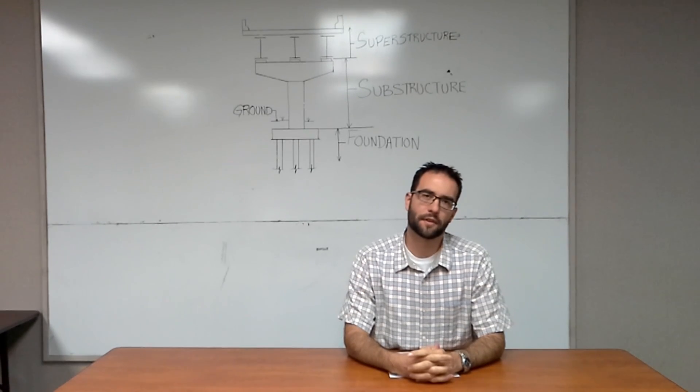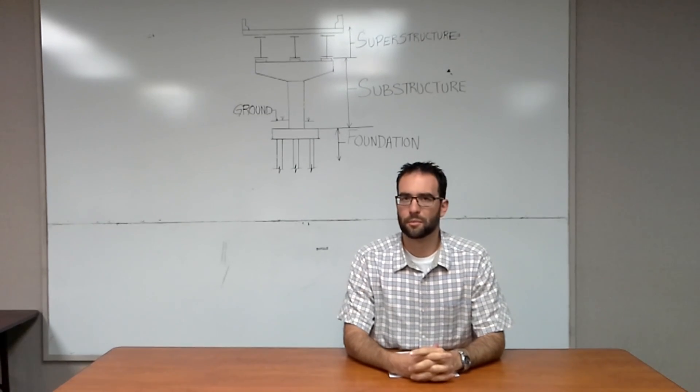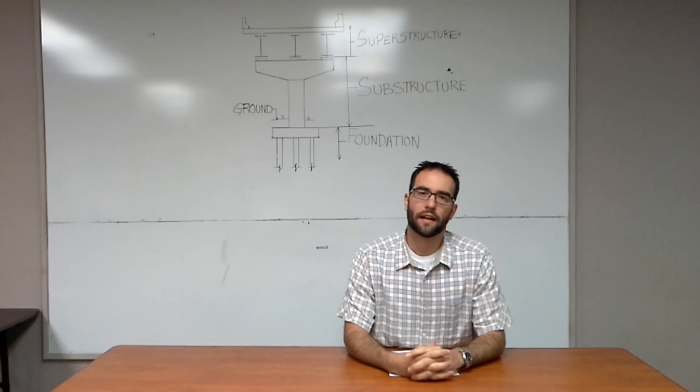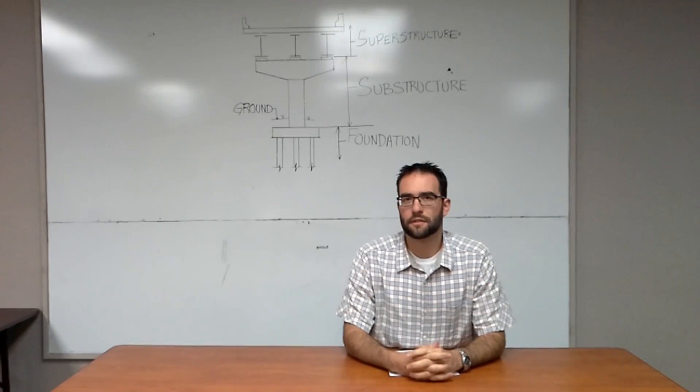The superstructure extends from the top of the deck to the bottom of the beams. The deck is the portion of the bridge where traffic or pedestrians will be located, and it's generally made of concrete, whereas the beams are generally made of steel or concrete.